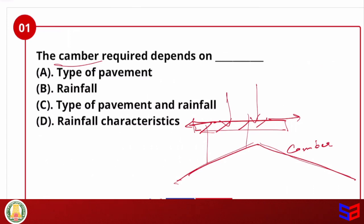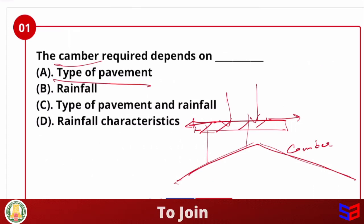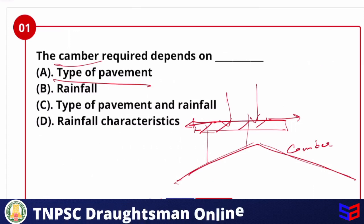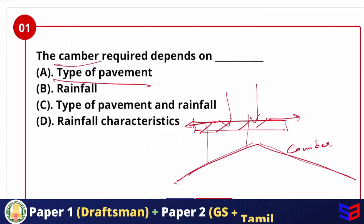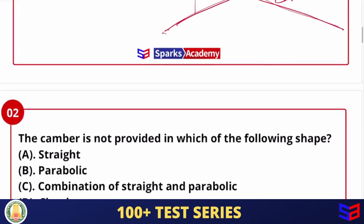If we look at the type of pavement — for example, an SH road versus a village road — the speed of vehicles is different. Also, rainfall characteristics play a role. So the answer for this question is: type of pavement and rainfall characteristics.